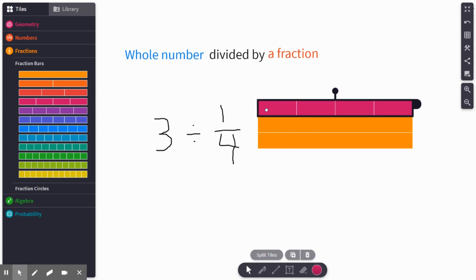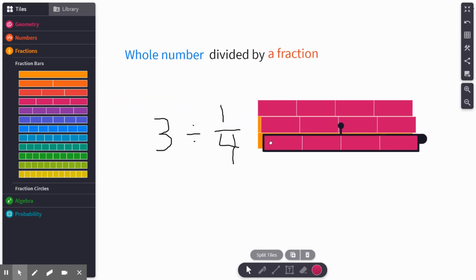And I'm going to take each whole and divide it into fourths. So again, maybe think of like candy bars or granola bars. If I had three candy bars, three orange candy bars, and then I cut each candy bar into fourths, into four equal parts, how many pieces do I have now?